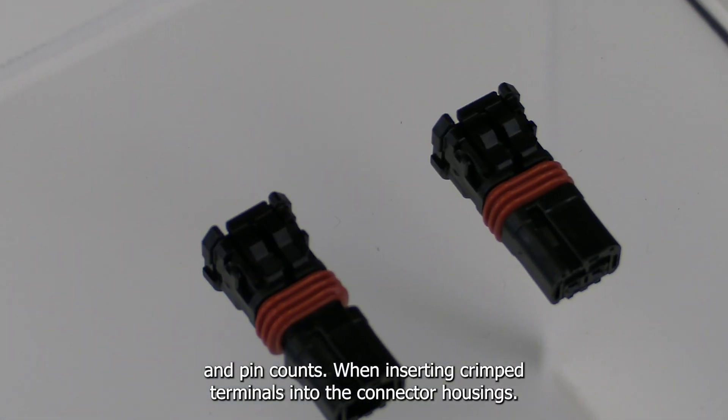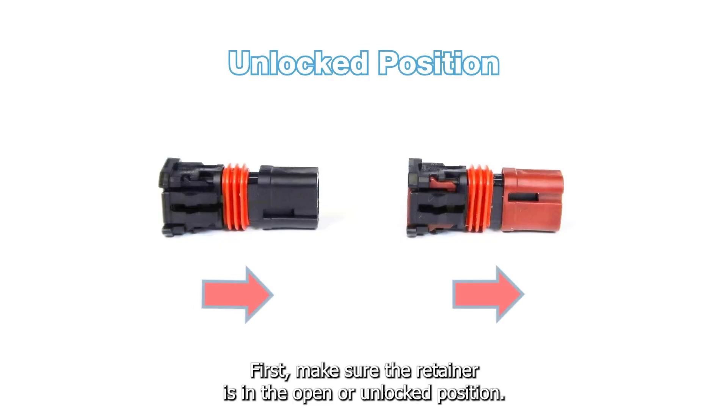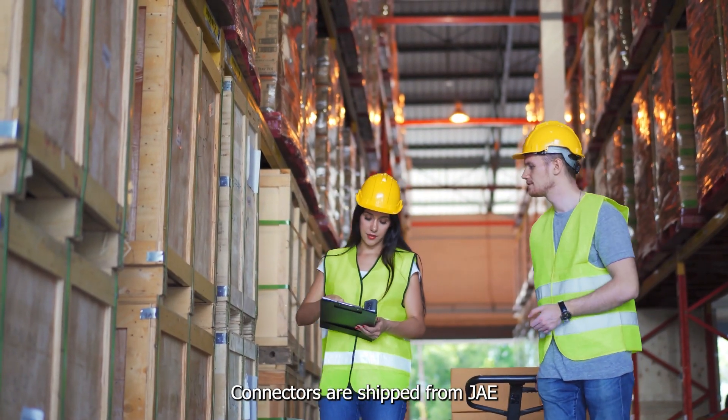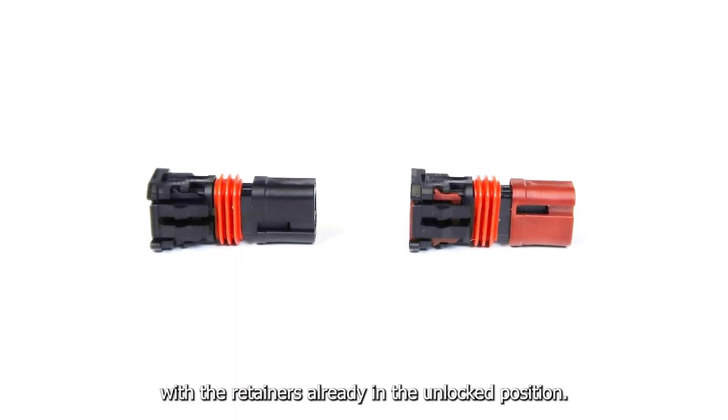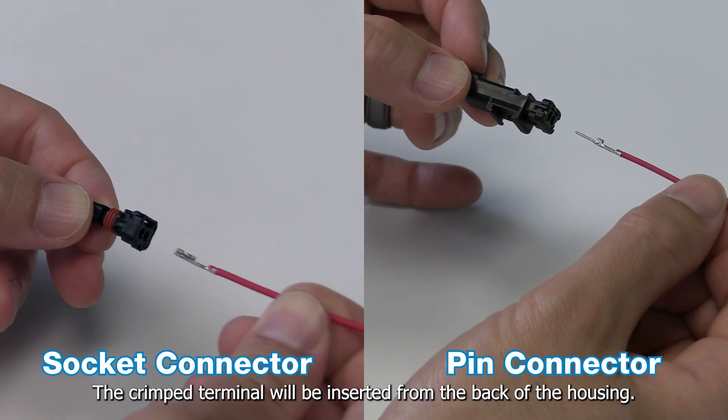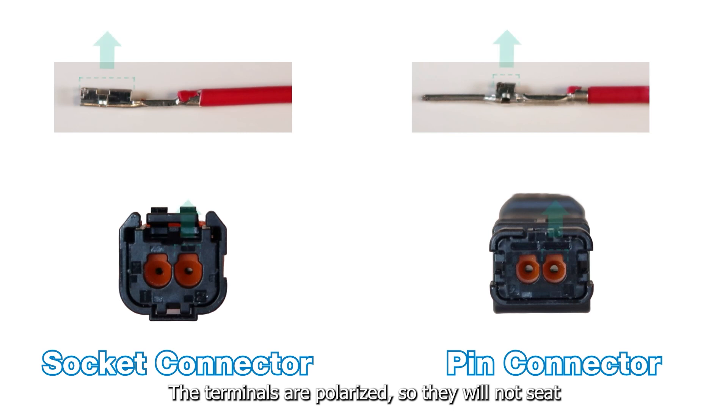When inserting crimped terminals into the connector housings, first make sure the retainer is in the open or unlocked position. Connectors are shipped from JAE with the retainers already in the unlocked position. The crimped terminal will be inserted from the back of the housing. The terminals are polarized so they will not seat properly in the housing if inserted upside down.